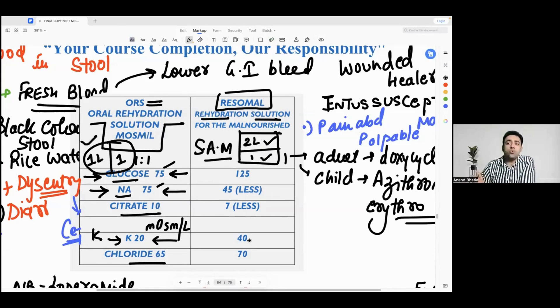Two questions they ask in exam: potassium is double in ReSoMal and sodium is half, as compared to the normal ORS. Normally in the ORS potassium is 20, in the ReSoMal it is 40. Sodium normally is 75, and in ReSoMal it is 45. Very important exam question.